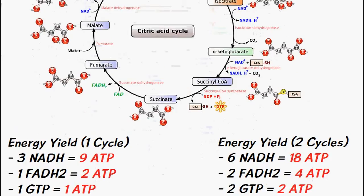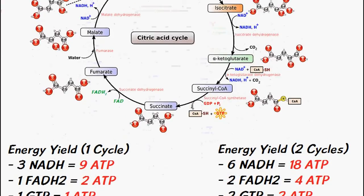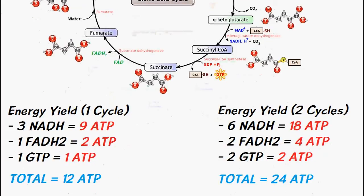Now these electron carriers which are produced, the NADH and the FADH2, they can be used in the formation of ATP in the electron transport chain which we'll be making a separate video about.